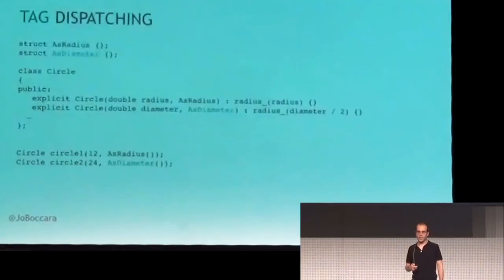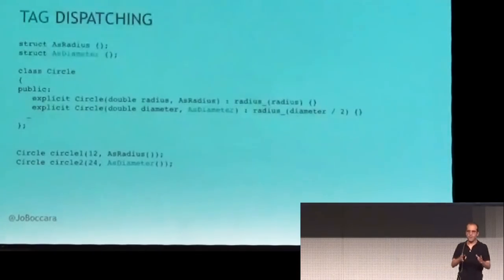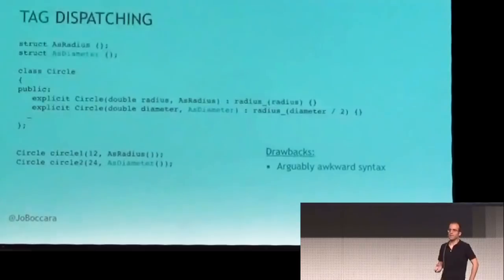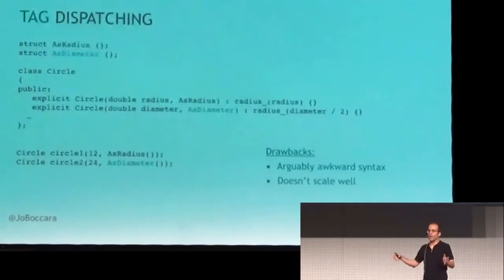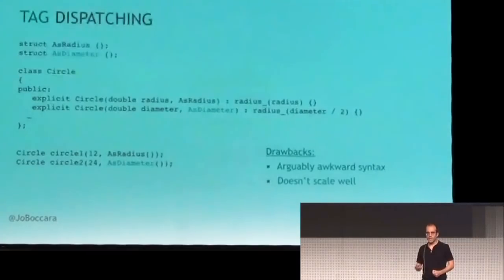Another solution is using tag dispatching, which is more idiomatic in C++. By tag dispatching, I mean creating a type that's there just for the sake of being there — it has no data, no behavior, just a name. We use this tag in a constructor: one tag called radius, another called diameter. We've got two different constructors and the problem is solved. However, it's a bit bizarre at call sites, especially if there are several parameters. You don't want to double up the number of parameters just for the sake of disambiguation. So in this particular case, tag dispatching is okay but not that good, which gets us to strong types.